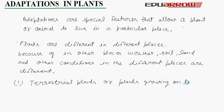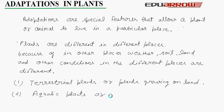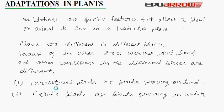Plants which are growing on land are called terrestrial plants. The second type is aquatic plants. So there are two types of plants: terrestrial plants and aquatic plants.